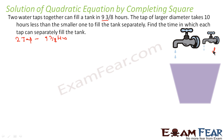Let's suppose the smaller diameter tap takes t hours. The question says the tap with larger diameter takes 10 hours less, so the larger diameter tap will take t minus 10 hours. This assumption is correct.